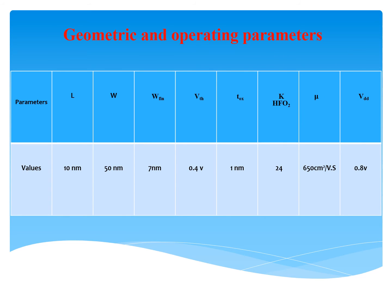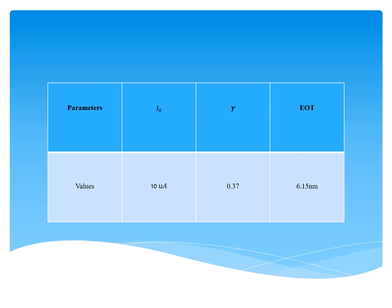The geometrical and operating parameters are as follows: L (channel length) is 10 nm; W (transistor width) is 50 nm; Wfin (fin width) is 7 nm; threshold voltage is 0.4 V; oxide thickness is 1 nm; high-K dielectric (Hafnium Oxide) with permittivity 24; mobility is 650 cm² per volt-second; and supply voltage is 0.8 V. The calculated parameters are: initial current 10 mA, gamma 0.37, and equivalent oxide thickness 6.15 nm.